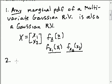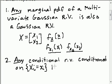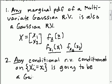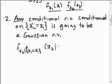The second property is that any conditional random variable, conditioned on some event x_i being equal to some number, is going to be a Gaussian random variable. So if I say: what is the PDF of x2 given the event that x1 is equal to some value little x1, then that PDF of x2 given x1 is going to be a Gaussian PDF for x2.